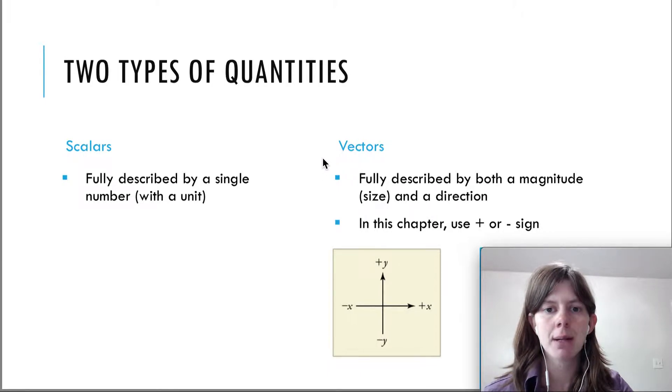So a scalar is something that is fully described by a single number with a unit. For example, you measure the length of your hand and it's nine centimeters. Nine centimeters - that's a number and a unit - that's a scalar.